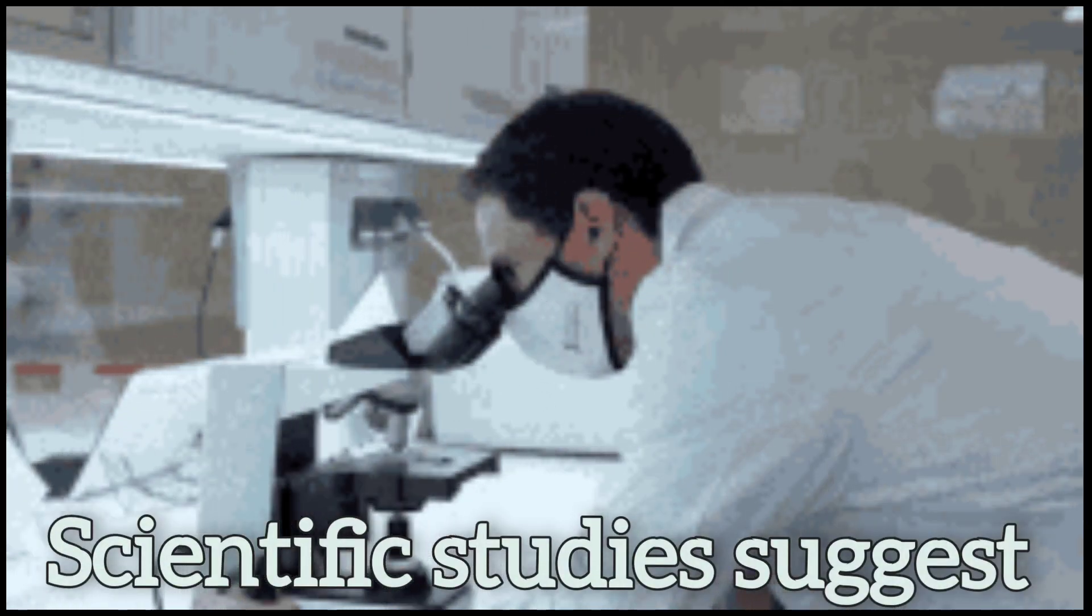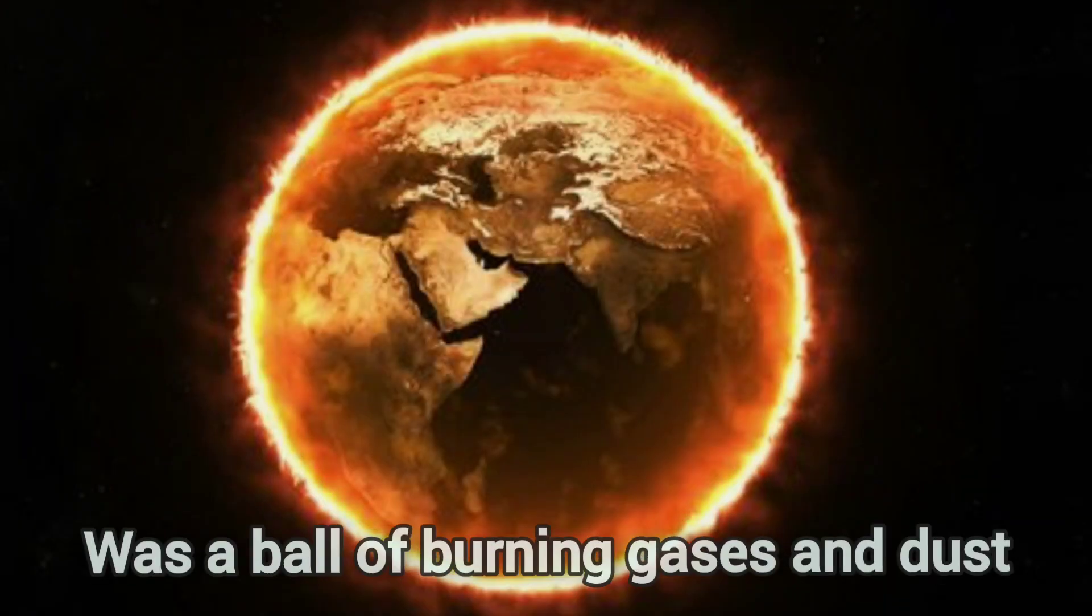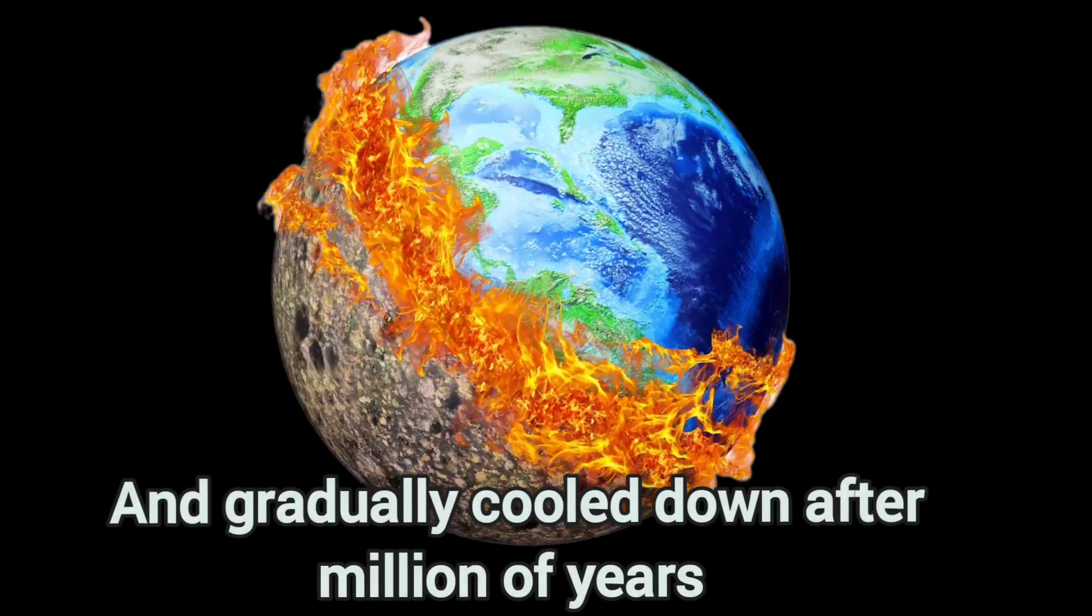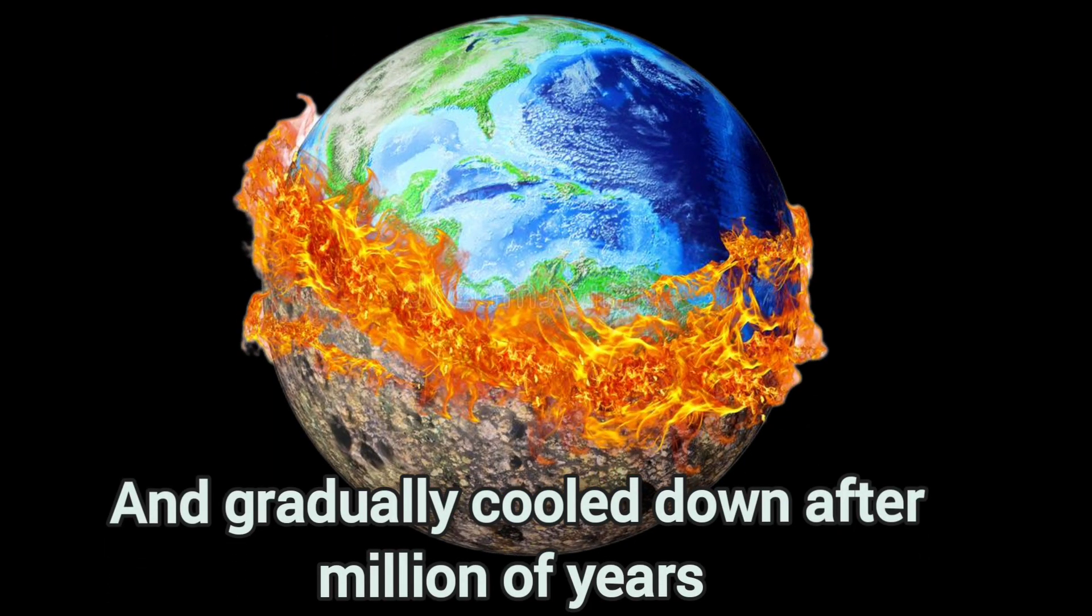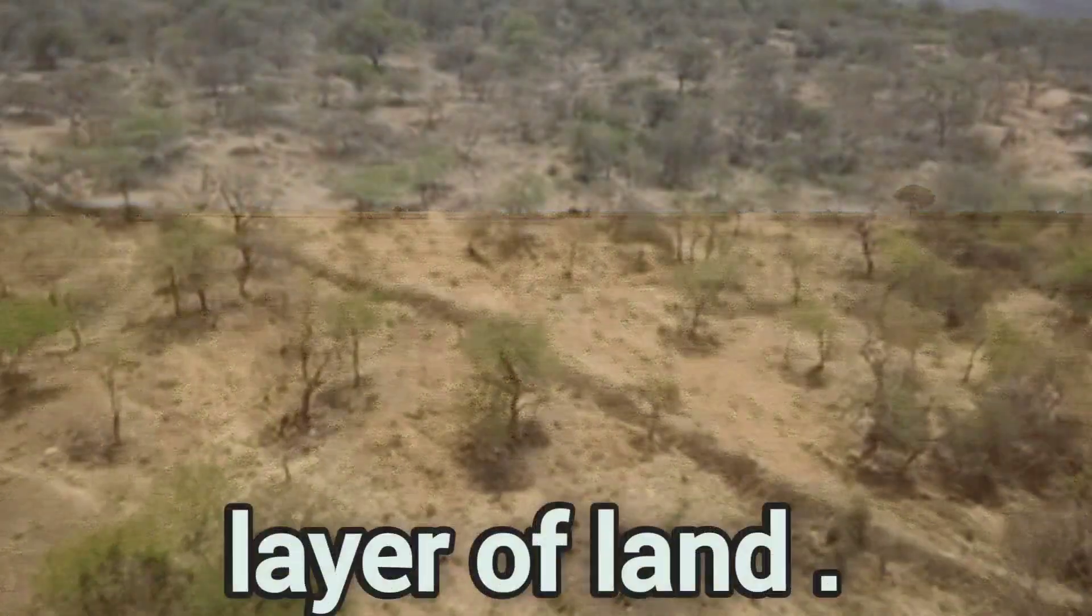Scientific studies suggest that initially the earth was a ball of burning gases and dust. These burning gases kept spinning and gradually cooled down after millions of years. The cool surface formed a solid layer of land.